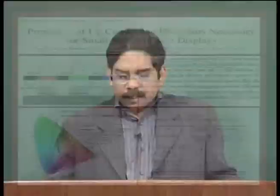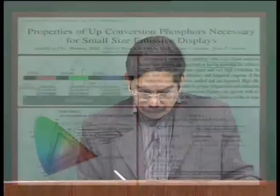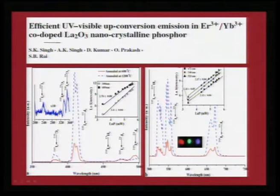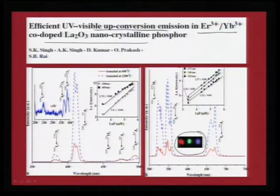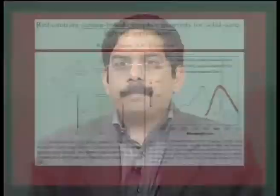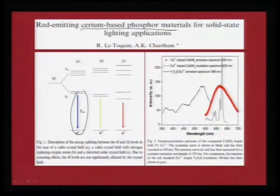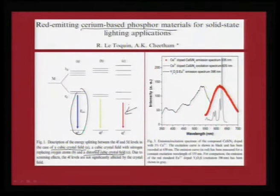Considering several hybrid combinations, up-conversion phosphors seem to have a larger scope than conventional ones. Using simple lanthanum oxide doped with erbium and ytterbium you can see the colour purity achievable. We can also look at red-emitting cerium-based phosphors — the colour emission differs depending on site symmetry: in a cubic crystal field the same doping gives blue; in a distorted cubic lattice you expect red; and adding nitrogen to replace oxygen atoms can modify the colour emission to green.